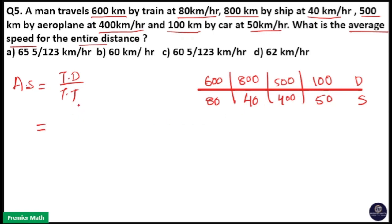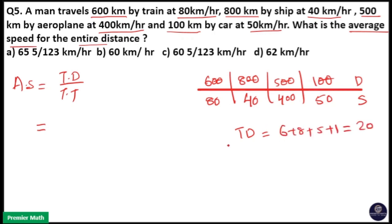Time is not given, so distance is common in both numerator and denominator, because time is equal to distance divided by speed. I will take the distance ratio, that is 6 : 8 : 5 : 1. So total distance will be 6 + 8 + 5 + 1 = 20 parts.